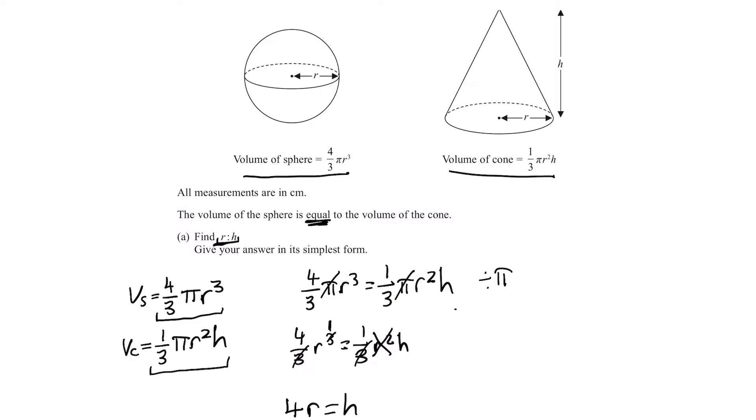Now we want the ratio R to H. This equation is telling us that the value of H is 4 times the value of R. So H is 4 times bigger than R. For every R we have, we must have 4H. So the ratio is just 1 to 4.